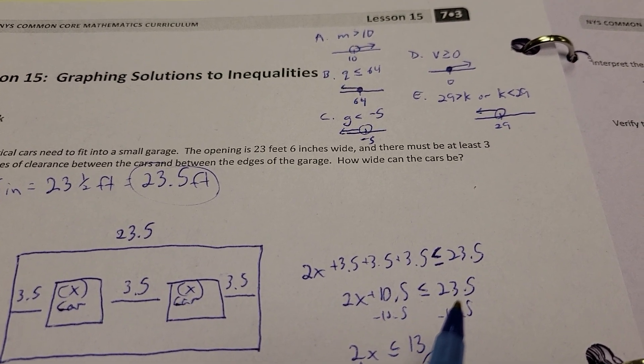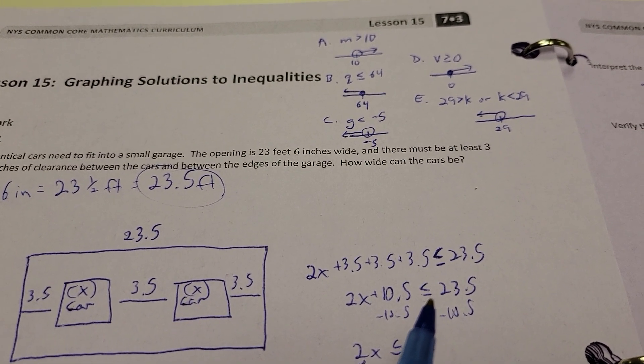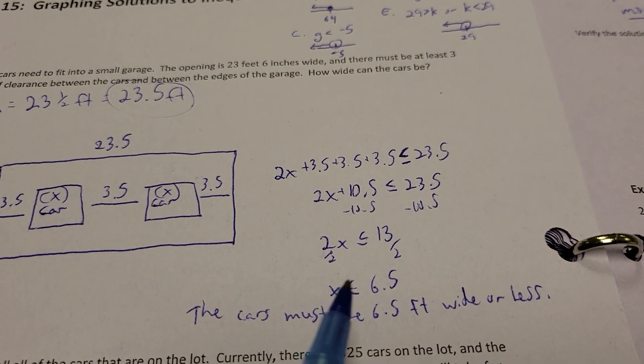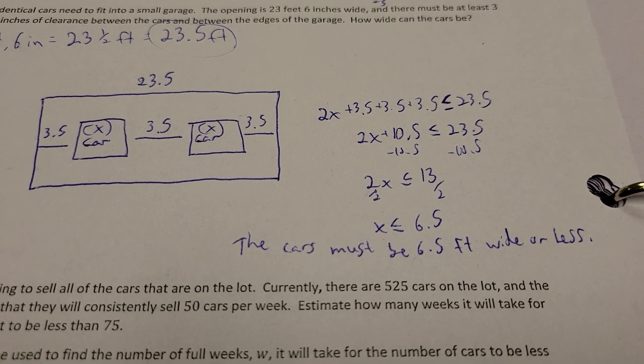Giving me 2X plus 10.5 has to be less than or equal to 23.5. And it can be smaller, it can be equal to it, it just can't be bigger because there's no more room in the garage. So, we solve it just like we would a normal equation, and X is less than or equal to 6.5, so it means the cars must be 6.5 feet wide or less.